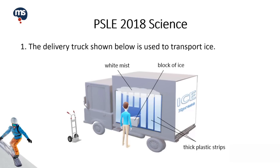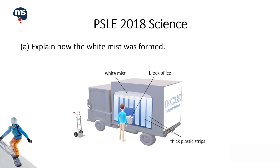Let's look at question 1. The delivery truck shown below is used to transport ice. Part A: Explain how the white mist was formed. Now let's look at the diagram carefully.